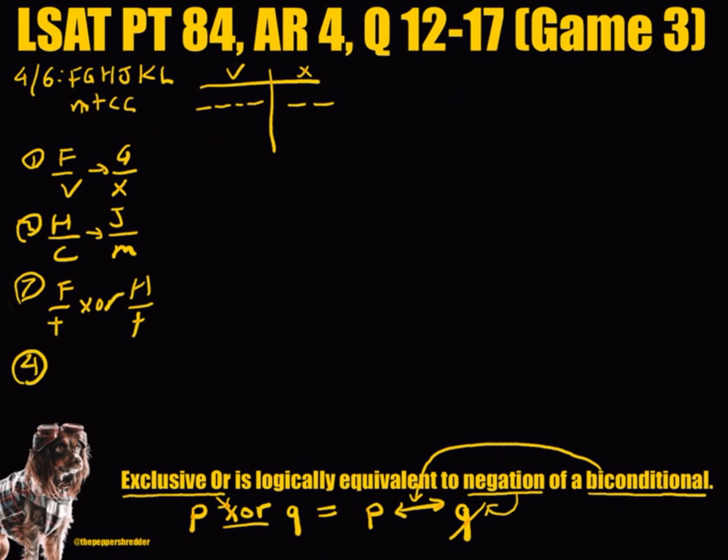Now let's draw a diagram and make deductions. First, we can note the contrapositive of rule 1: If G is in, then F must be out. We can also note the contrapositive of rule 2: If J is not grouped with M, then H must not be grouped with C.